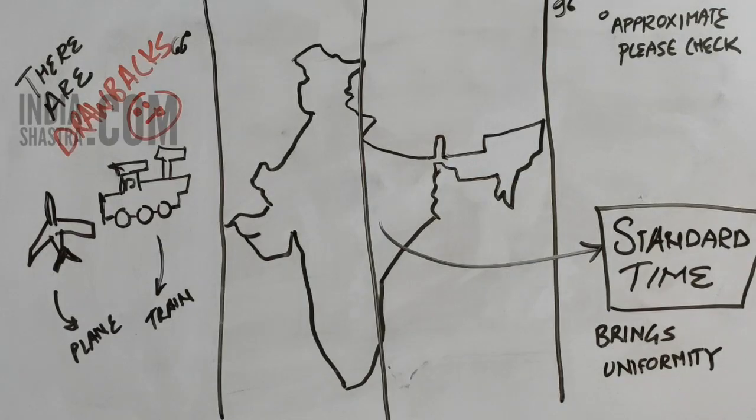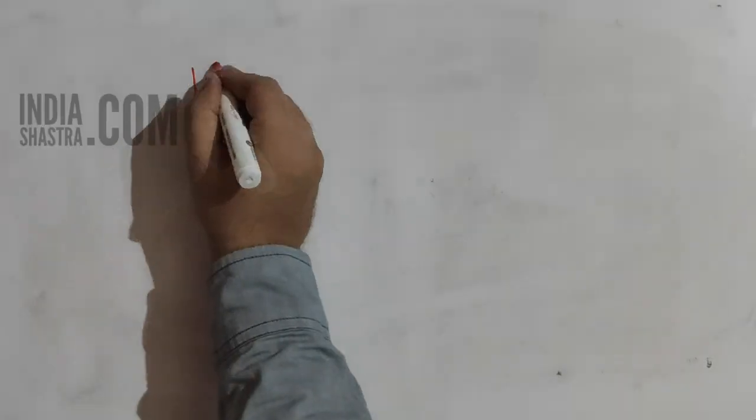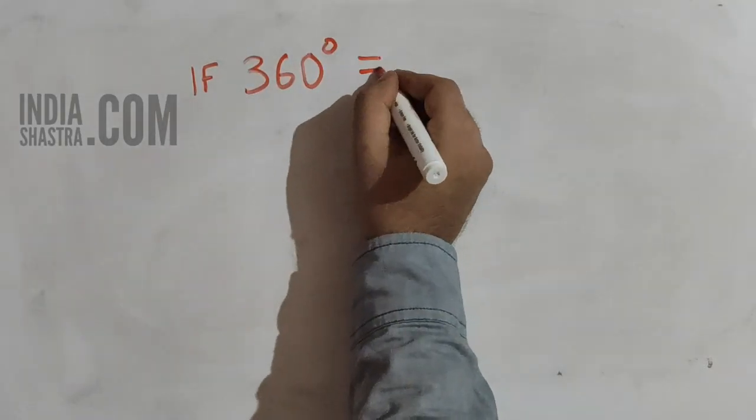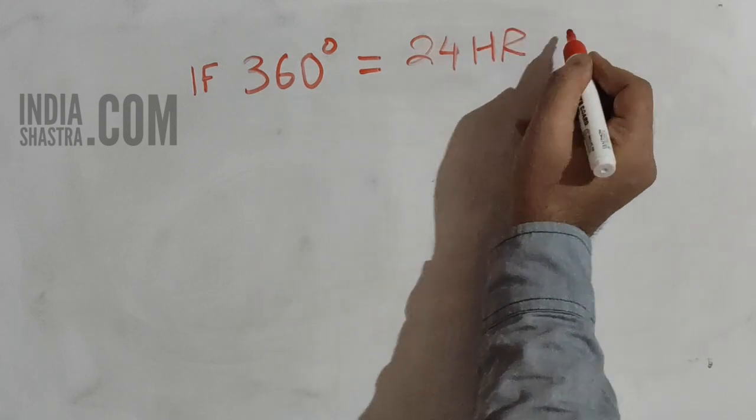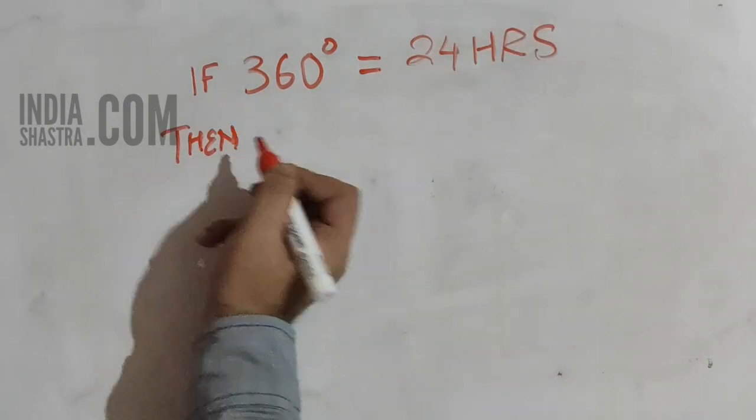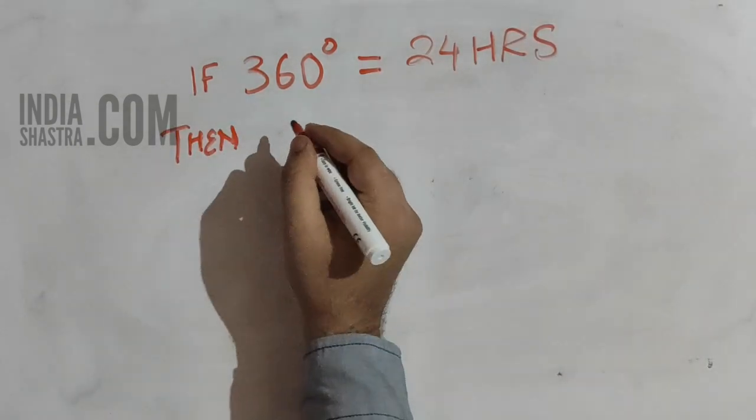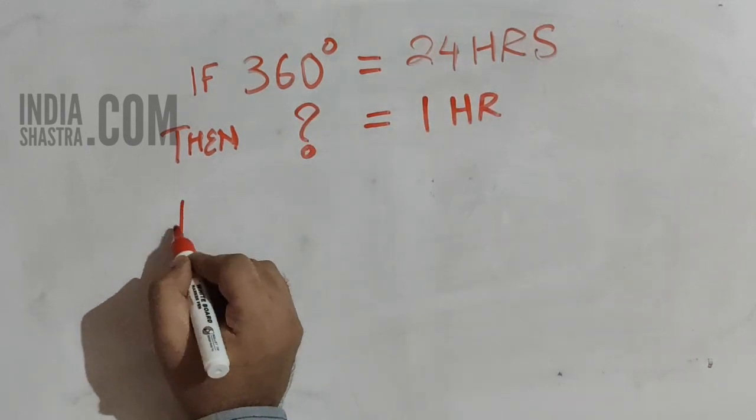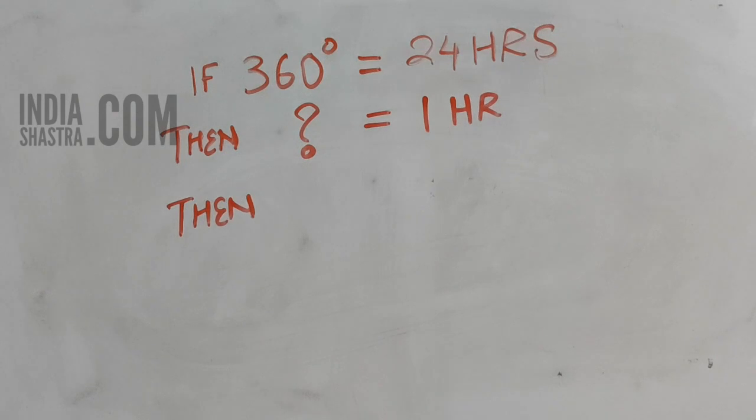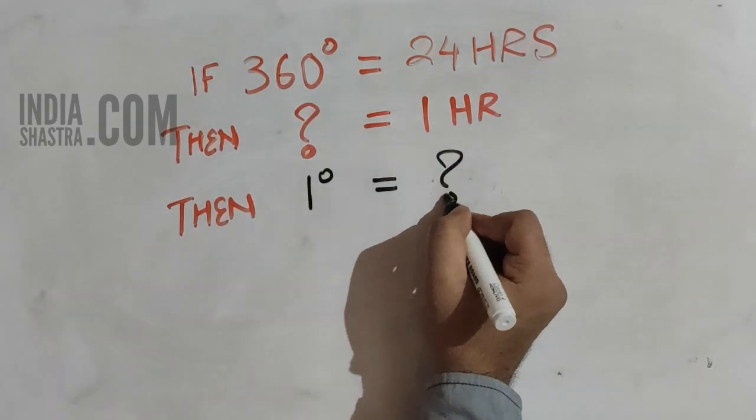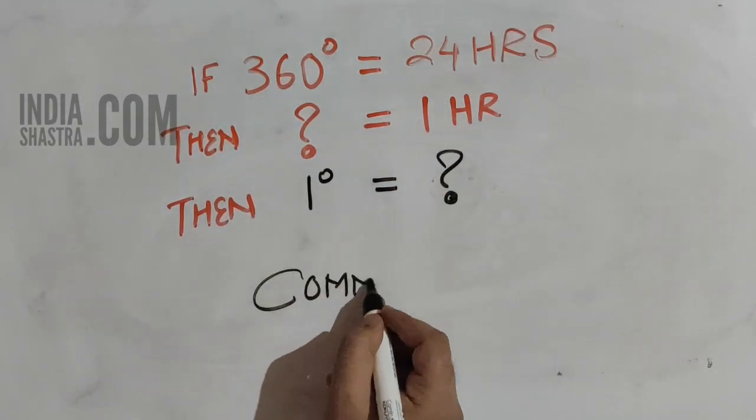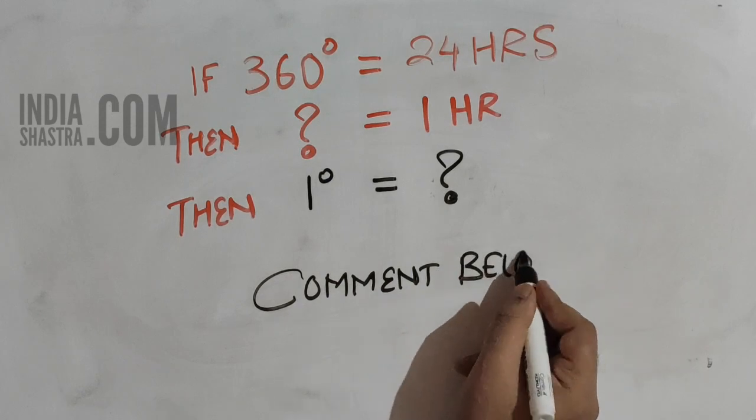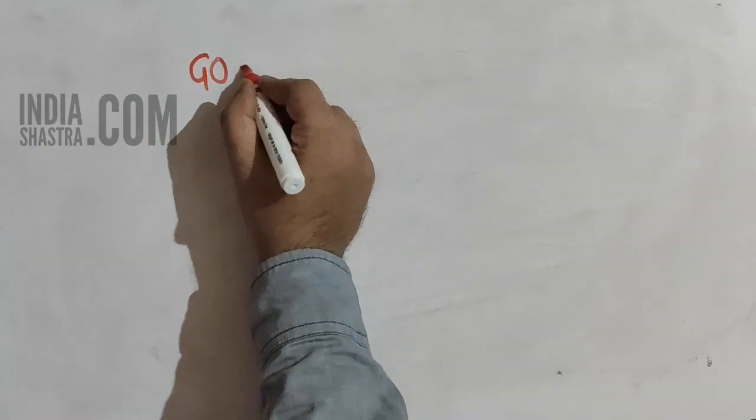In this chapter, there is some numerical calculation that you should know. It is a simple numerical problem. 360 degrees corresponds to 24 hours. So can you tell me, 1 hour corresponds to how many degrees? The answer is 15 degrees. It means that Earth moves 15 degrees every hour.